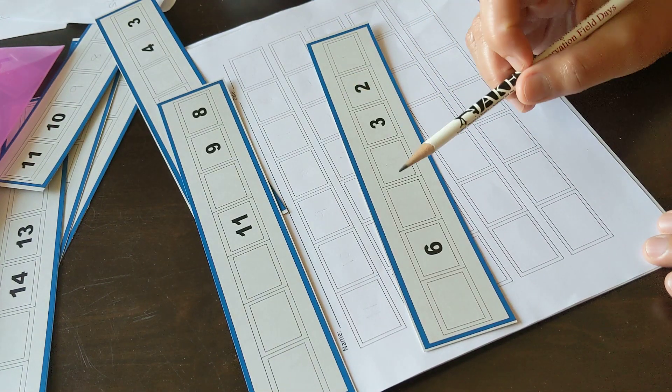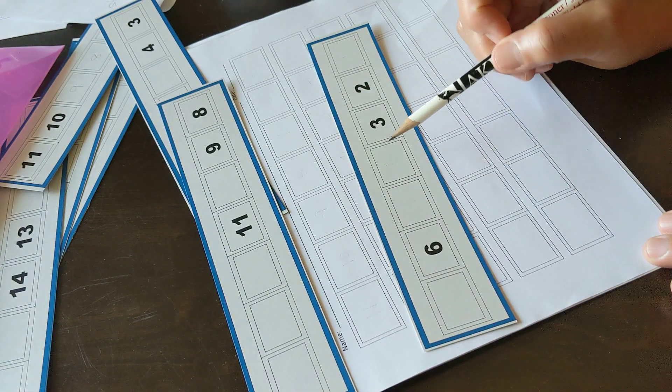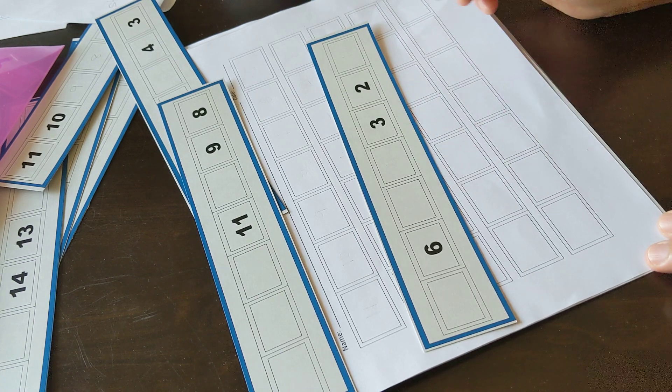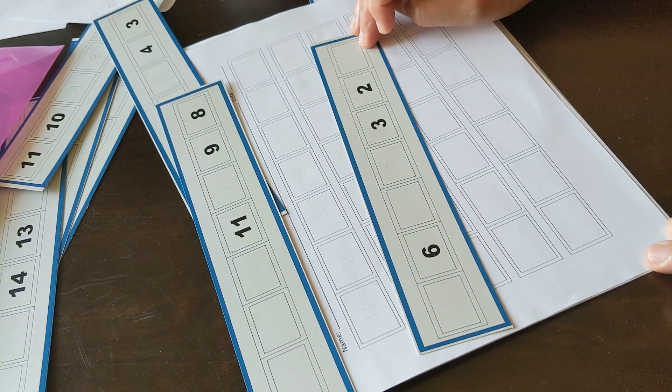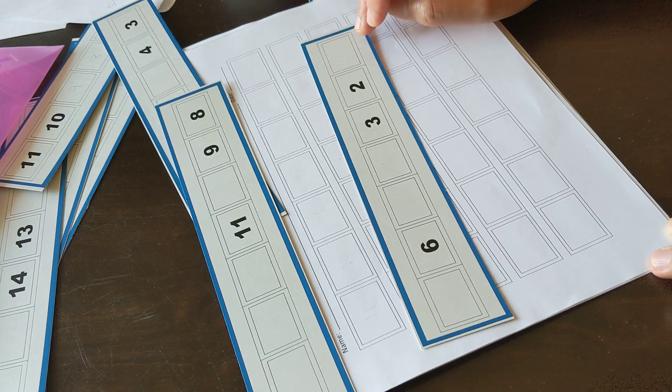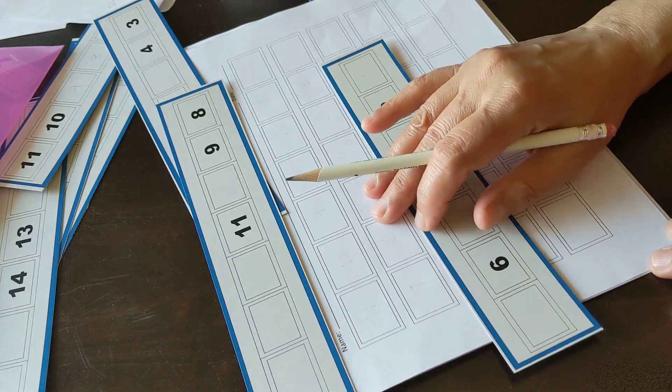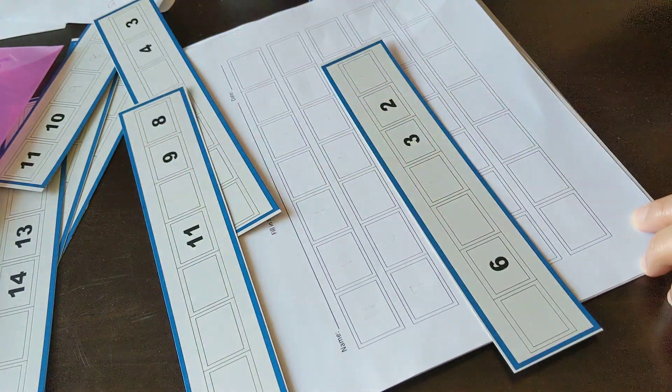In this activity, students use clues to identify the order of numbers to fill in the boxes. Please laminate these cards and provide a dry erase marker so students can write directly on these cards before they place them on the task card.